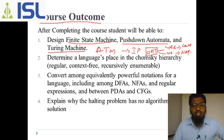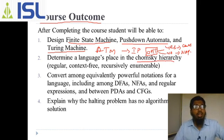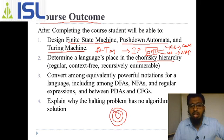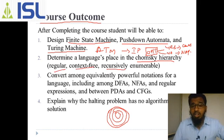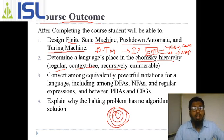The second course outcome is to determine a language's place in the Chomsky hierarchy — regular, context-free, recursively enumerable. We will see this Chomsky hierarchy structure and identify at what level a given item sits: where is regular, where is context-free, where is context-sensitive grammar. We will cover all of that in coming classes.